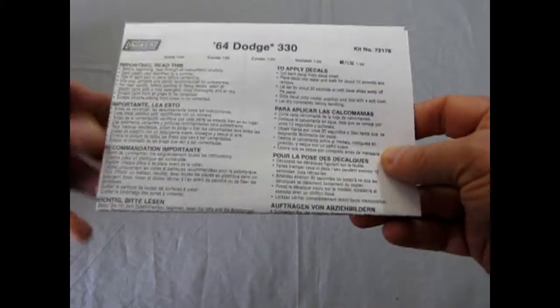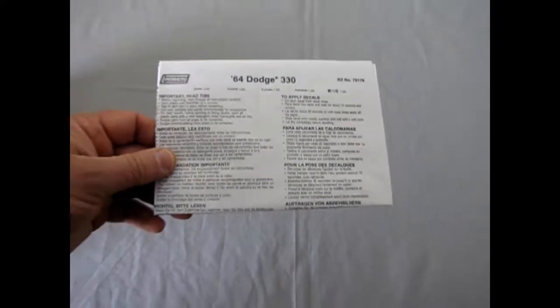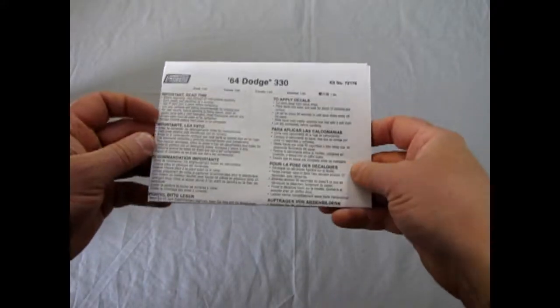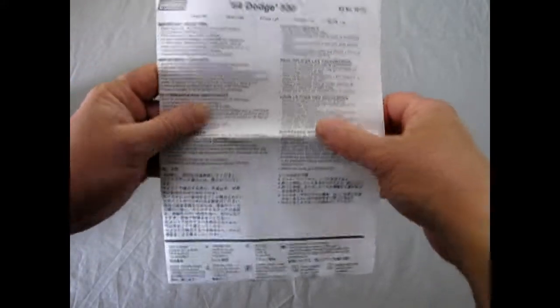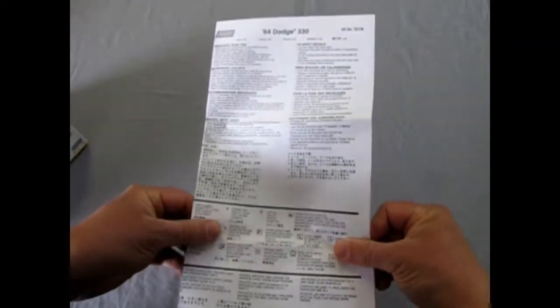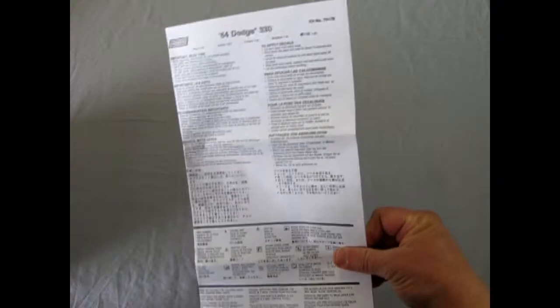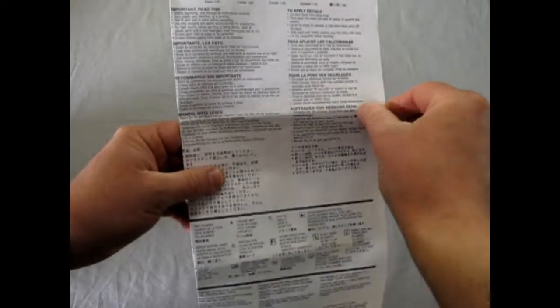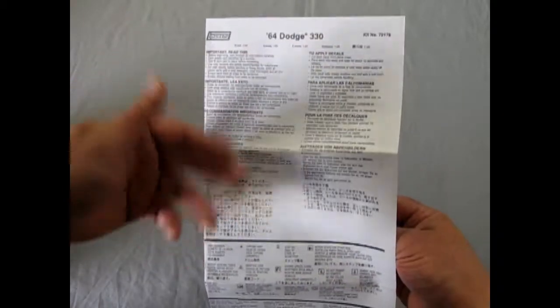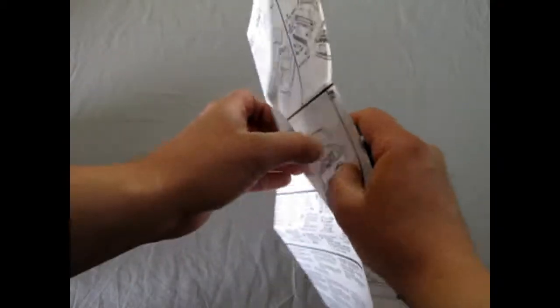So let's move this out of the way. Take a look at these amazing Lindbergh instructions. So Lindbergh had a really basic instruction sheet, compared to AMT and Revell, Monogram, those other guys, as you can tell. But they ship these all around the world, so there's more languages. So less pictures, more languages.